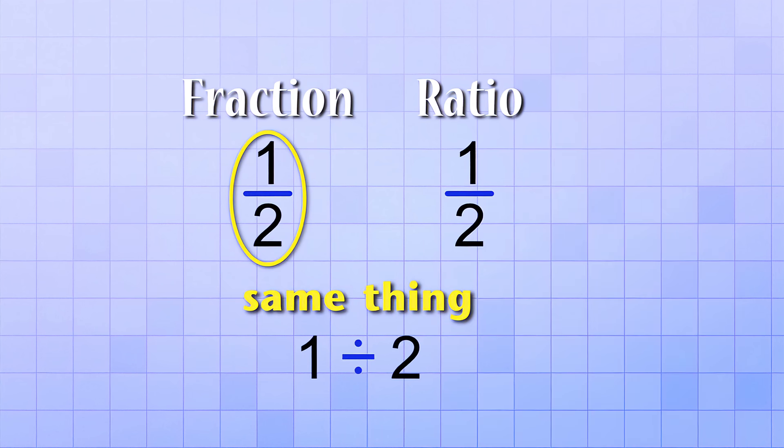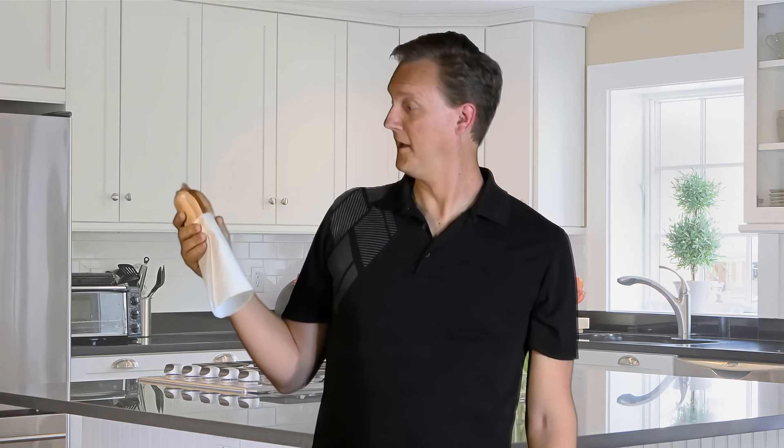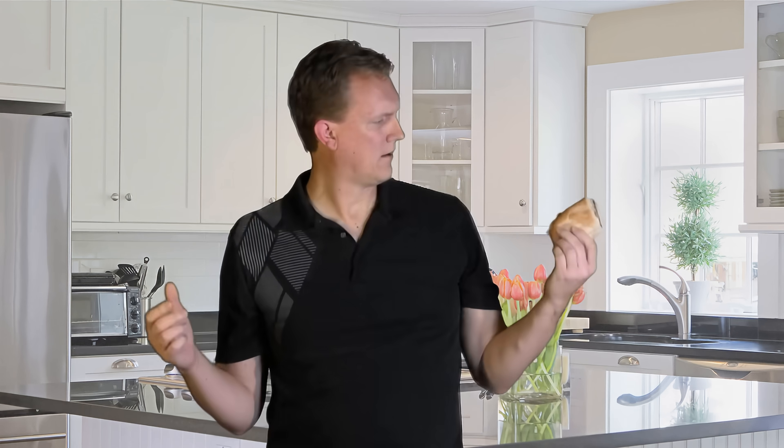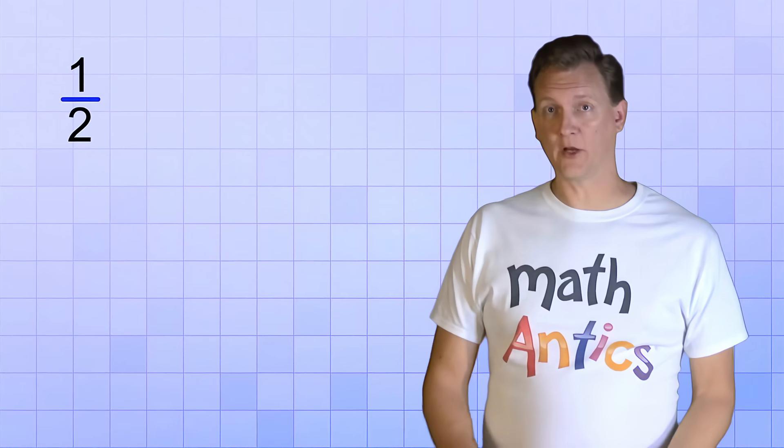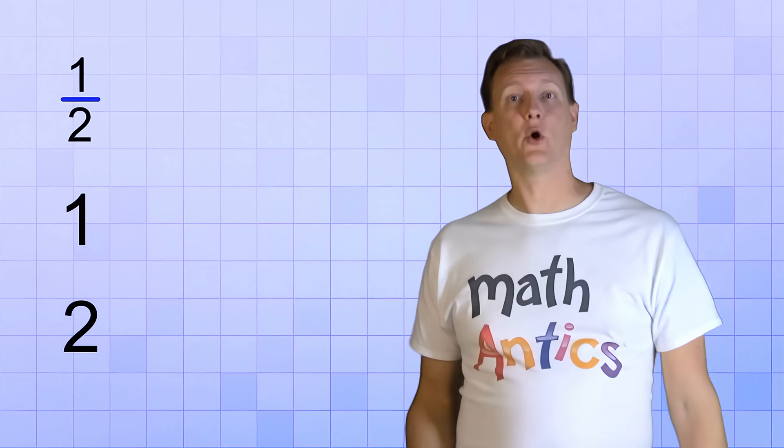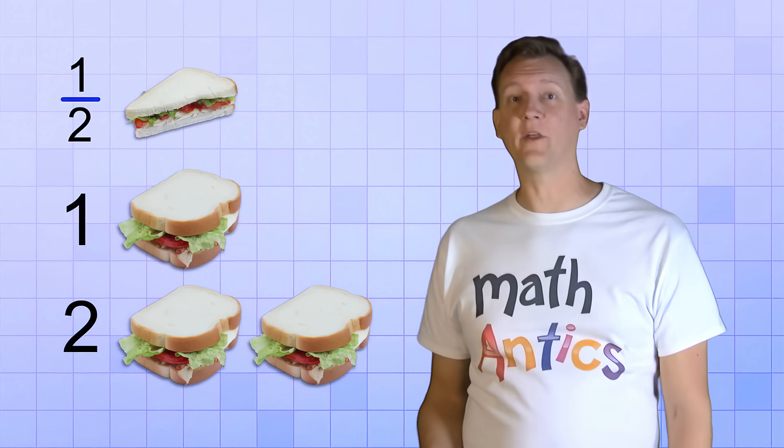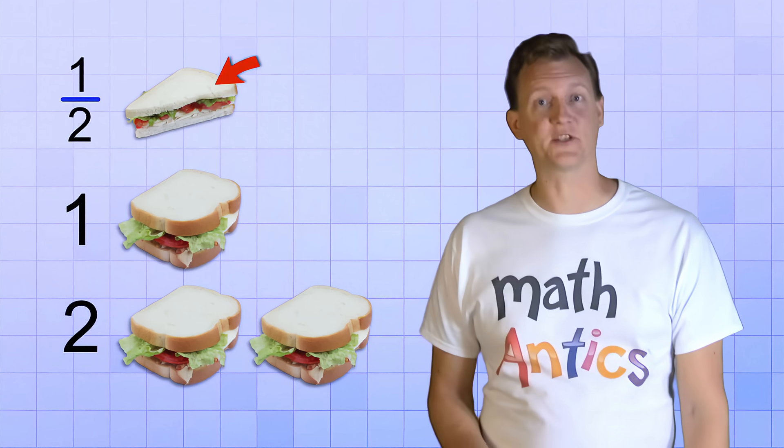For example, at lunch time, you might eat one sandwich, or if you're really hungry, you might eat two sandwiches. But if you're not very hungry, you might just have half a sandwich. We can use the fraction 1 half, just like we use 1 or 2 to show how many sandwiches you eat. It's just that in the case of 1 half, we know that it's only part of a sandwich, just a fraction of 1.